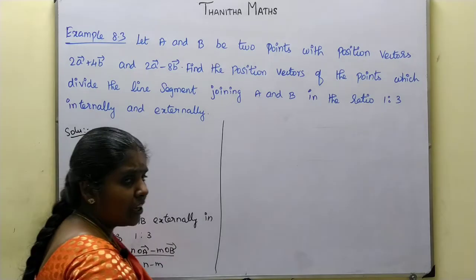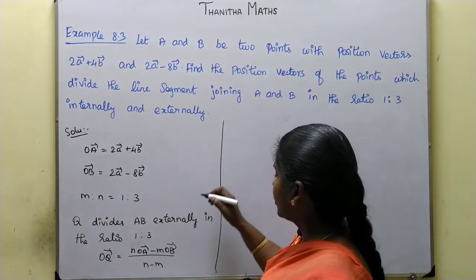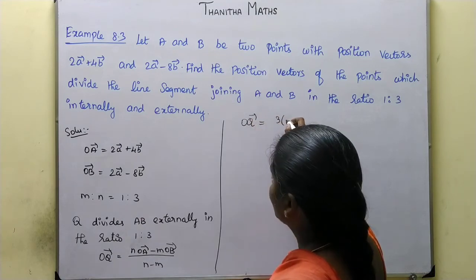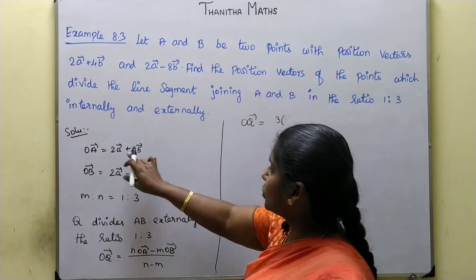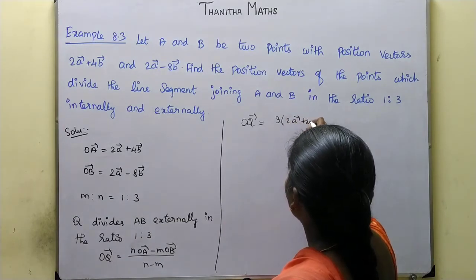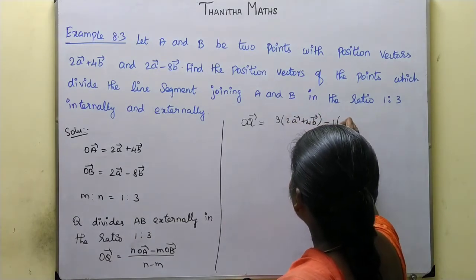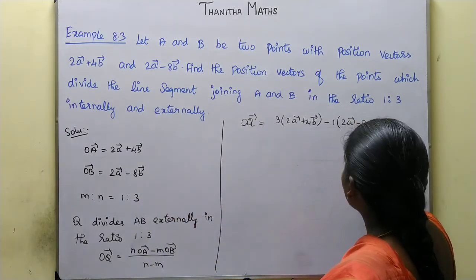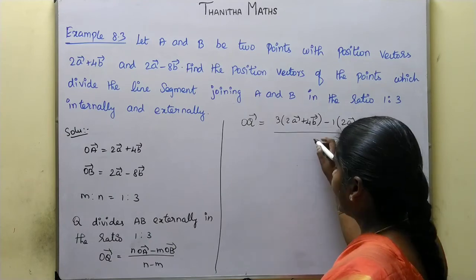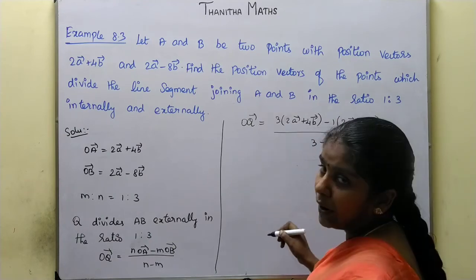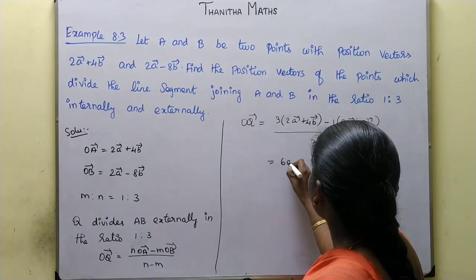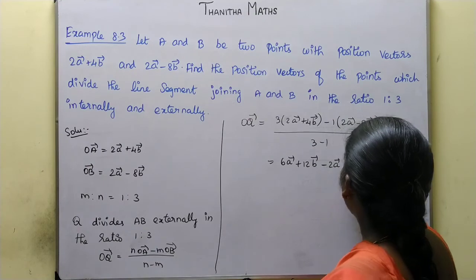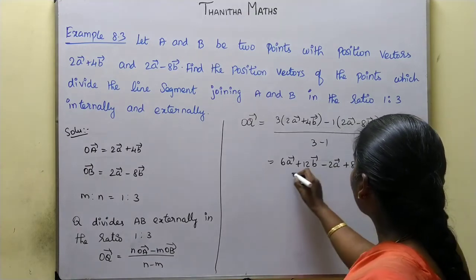With n equal to 3 and m equal to 1, OQ vector equals 3 into OA vector, which is 2a vector plus 4b vector, minus 1 into OB vector, which is 2a vector minus 8b vector, divided by n minus m, which is 3 minus 1 equals 2. That gives 6a vector plus 12b vector minus 2a vector plus 8b vector, divided by 2, equaling 4a vector plus 20b vector divided by 2.